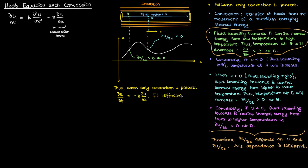If we include heat conduction in the picture also then the rate of change of u will be k times the second partial of u with respect to x, minus v times the first partial of u with respect to x. And this PDE is known as the heat equation with convection.